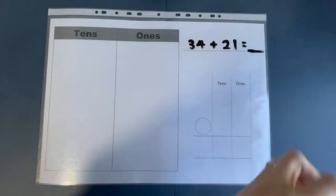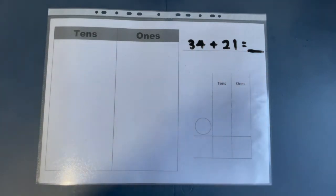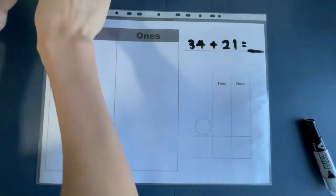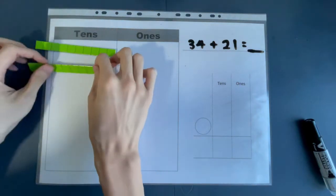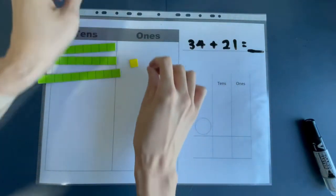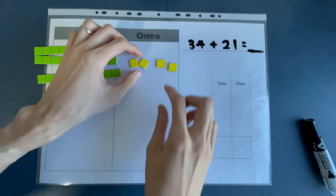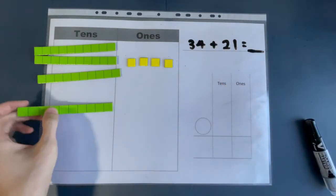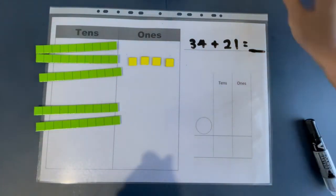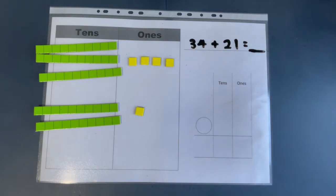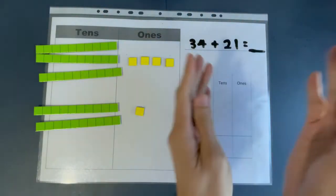Next question: 34 plus 21. Let's make 34 over here — 34 is made out of three tens and four ones. One, two, three tens. Now let's make four ones: one, two, three, and four. So four ones over here. Now let's make 21: two tens and one one. Two tens over here and one one. So what is the next step? Copy this over here.